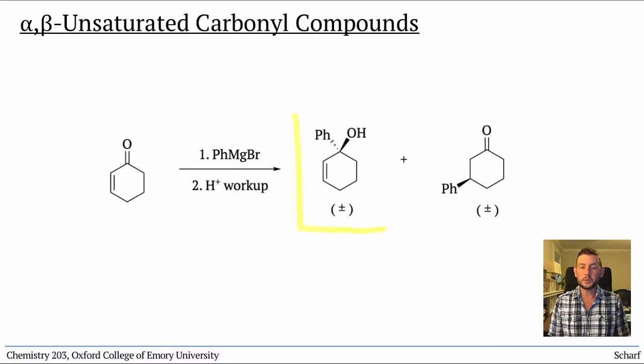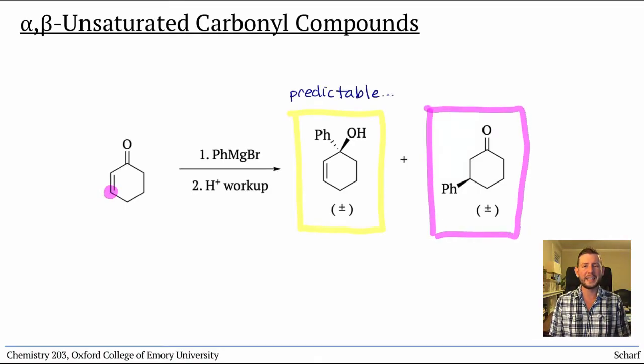The first one I probably could have predicted, but the second one involved the Grignard attacking here, at the beta carbon.